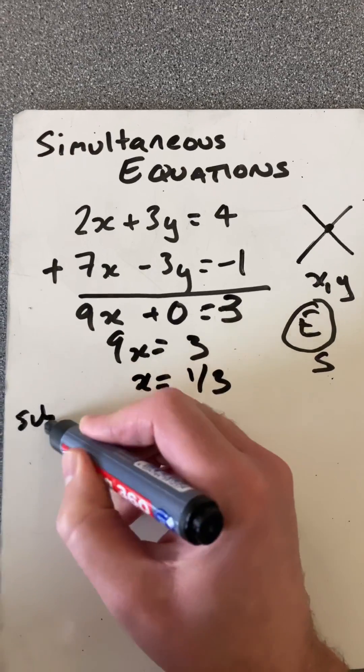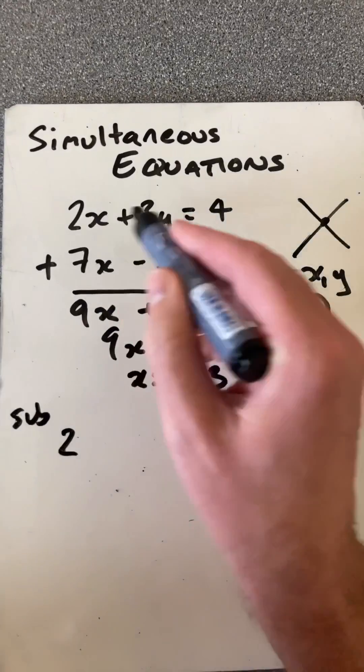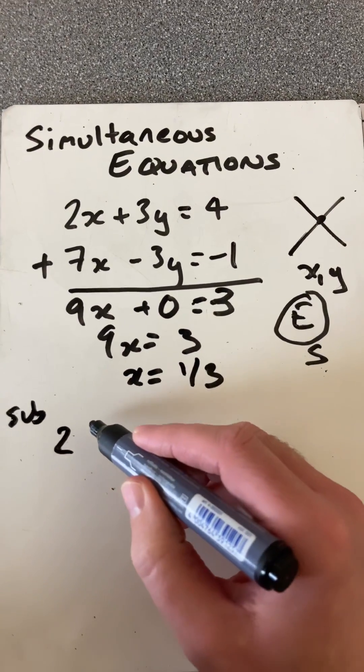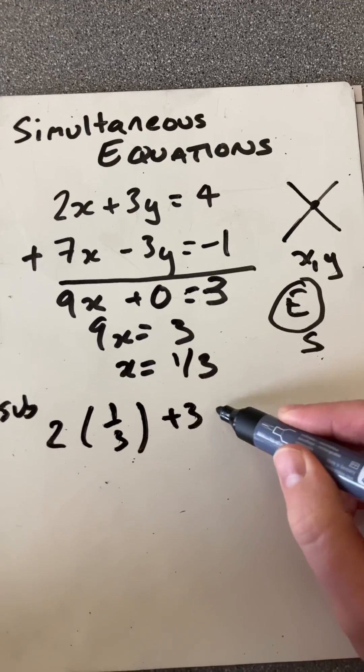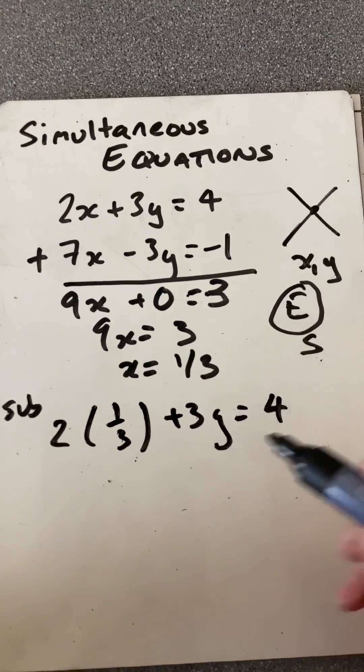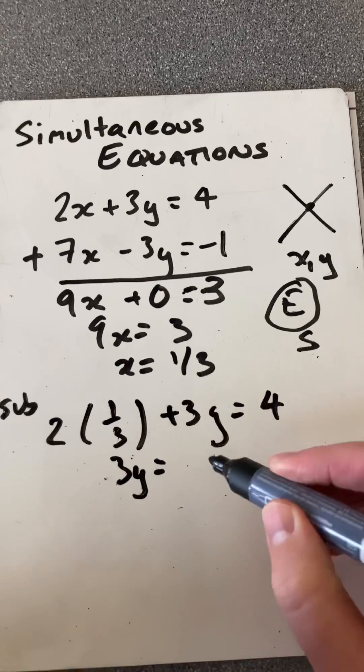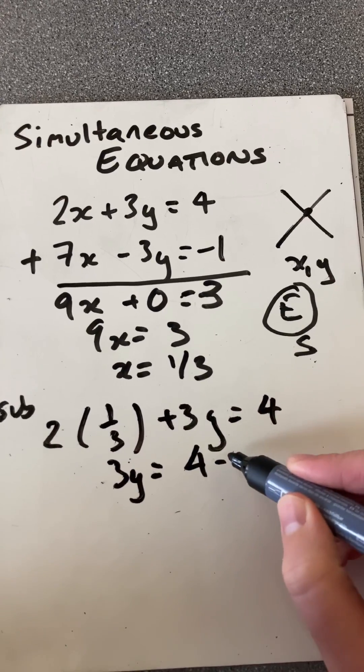And now use substitution. Plug it into either of those. I'll choose the first one. 2 times a third plus 3y equals 4. So 3y equals 4 minus 2 thirds.